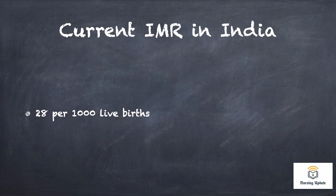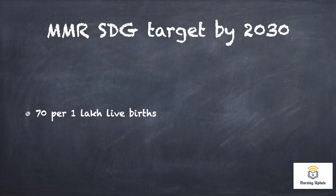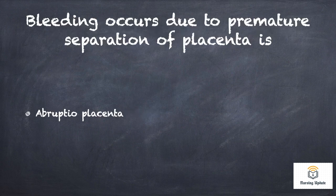Current IMR in India: it is 28 per 1000 live births. According to SDG — Sustainable Developmental Goals — the MMR target by 2030 is 70 per 100,000 live births.